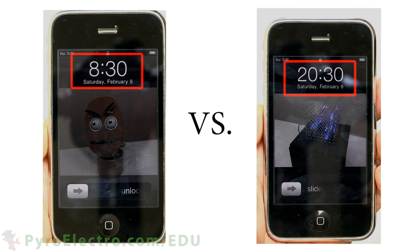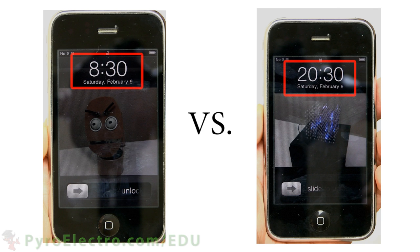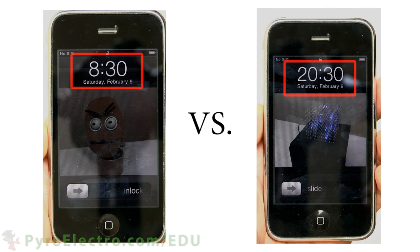When a 24-hour clock reads 20.30, a 12-hour clock will read 8.30 p.m. Again, this is the exact same information, we're just displaying it in two unique ways.